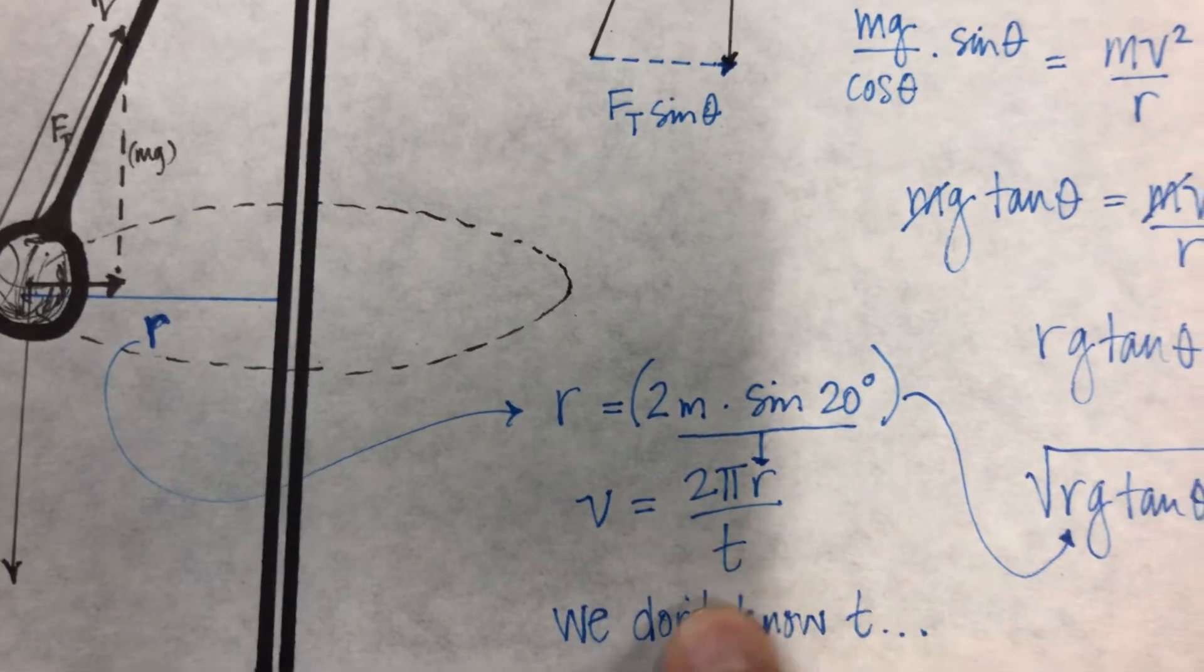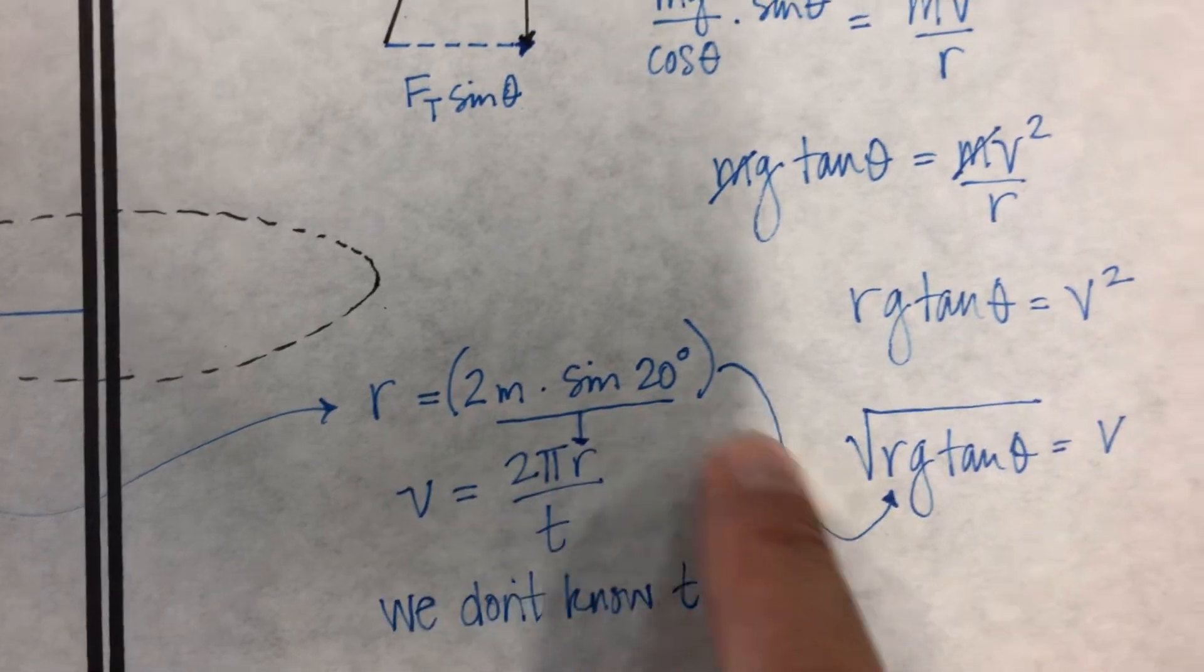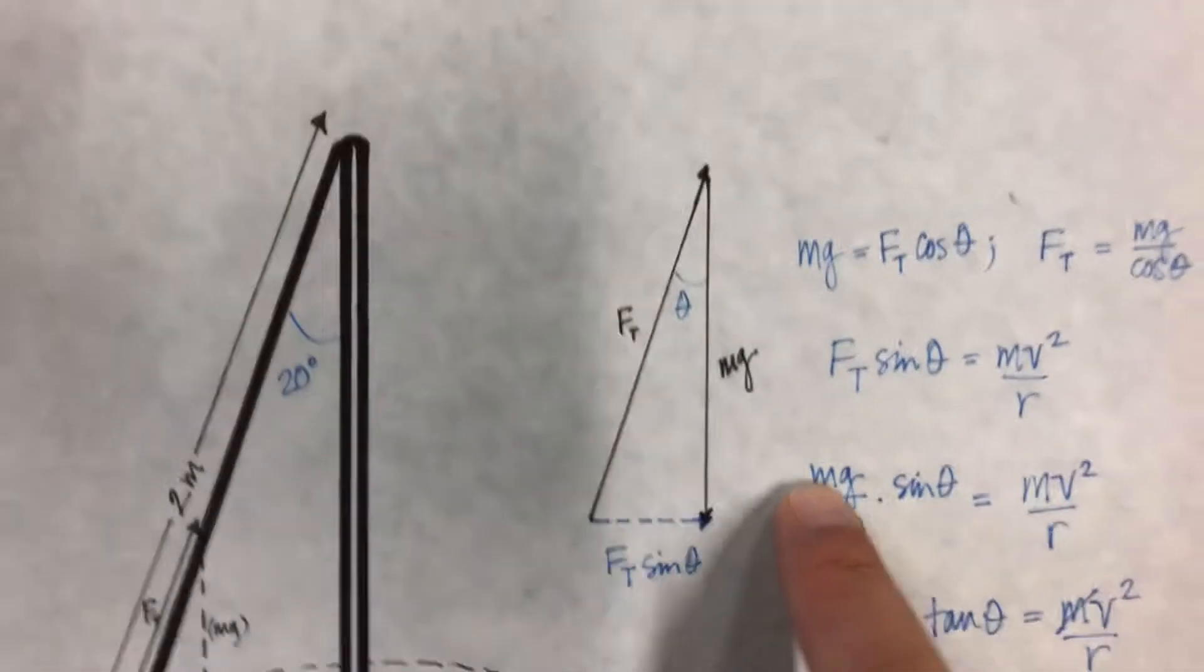Then the velocity is 2πr over t, but we don't know time. Uh-oh. So we can use the r and solve for...